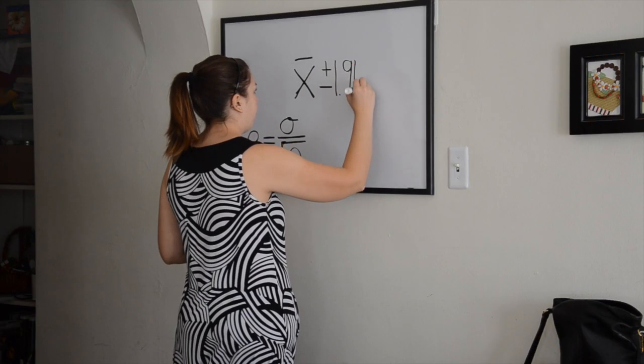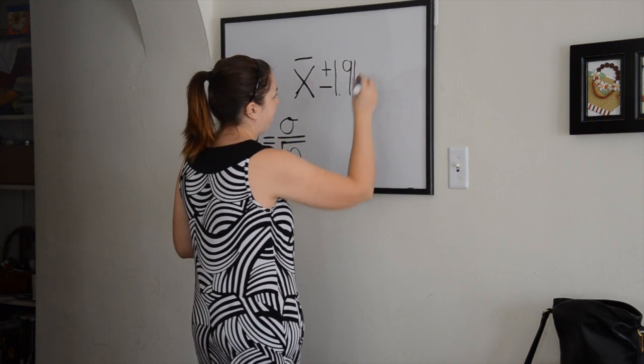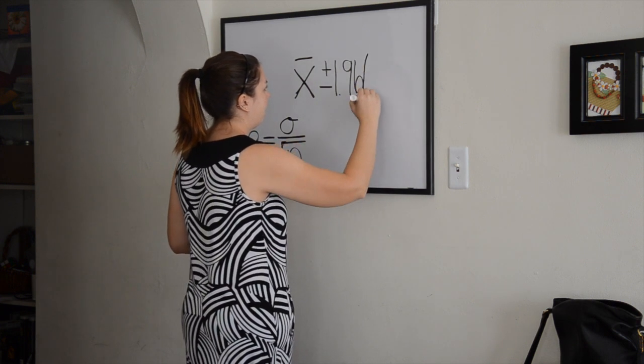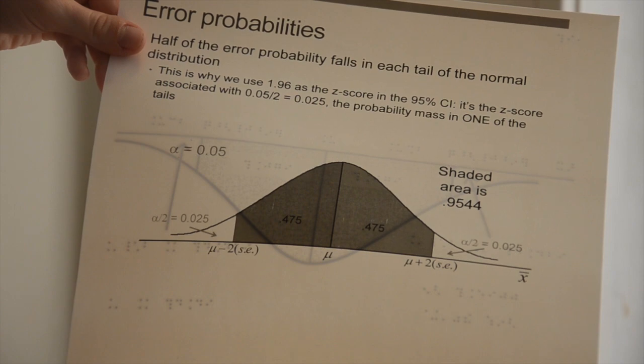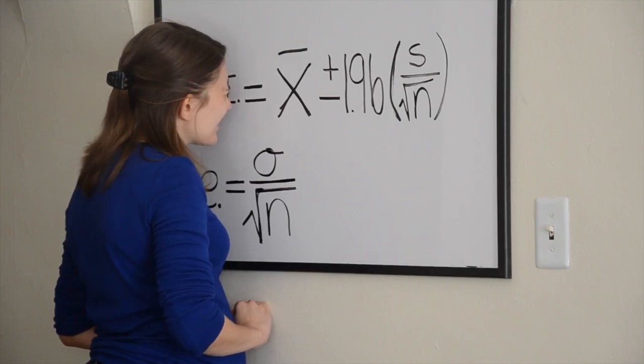And so being able to have Casey or Jen describe what the equation looks like to me and what's on top of what, because it just doesn't read it that great with the screen reader, it helps me really be able to see it and understand what I'm doing with it.